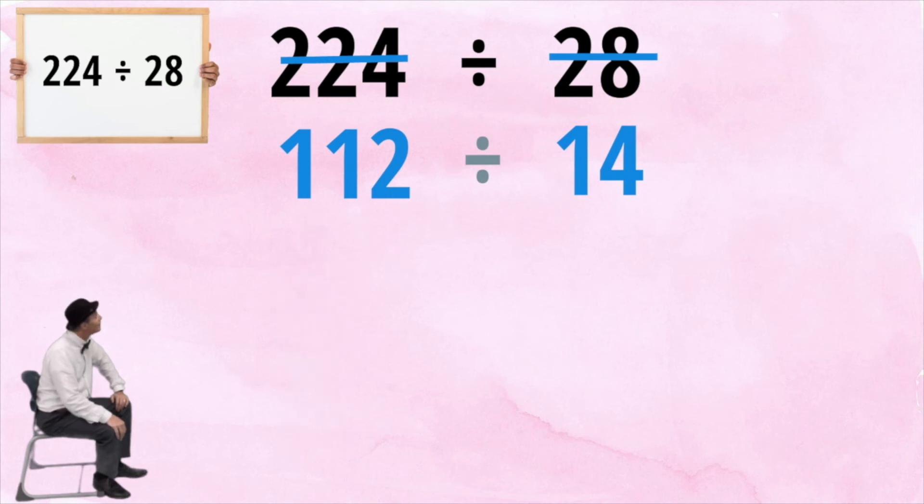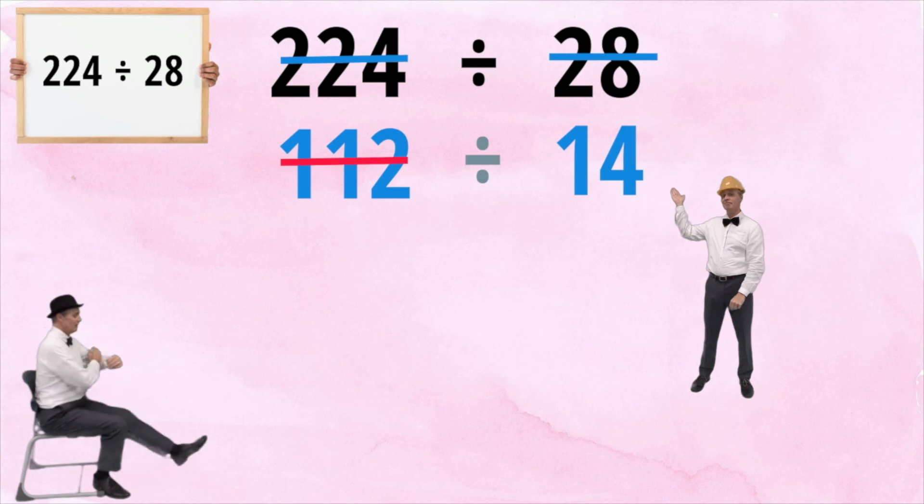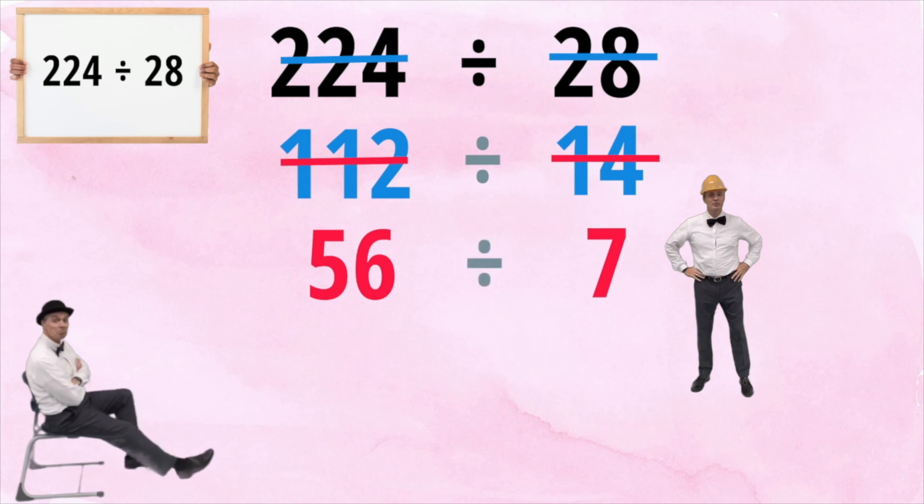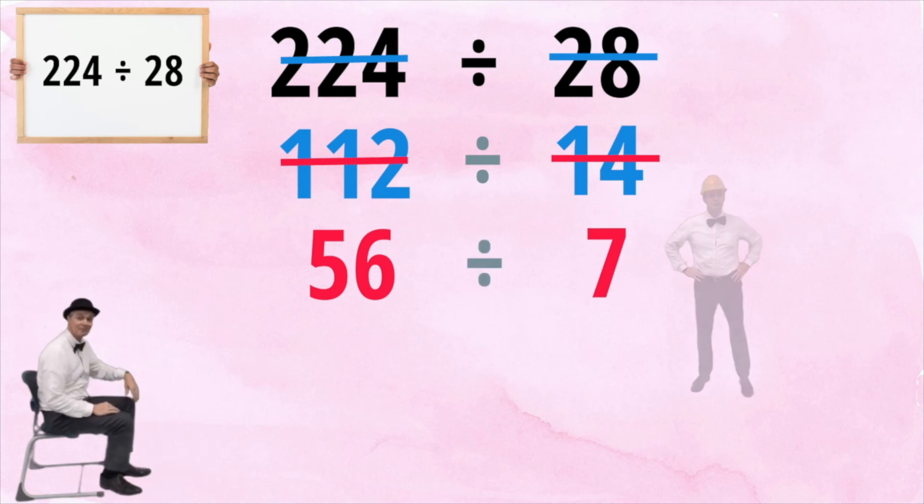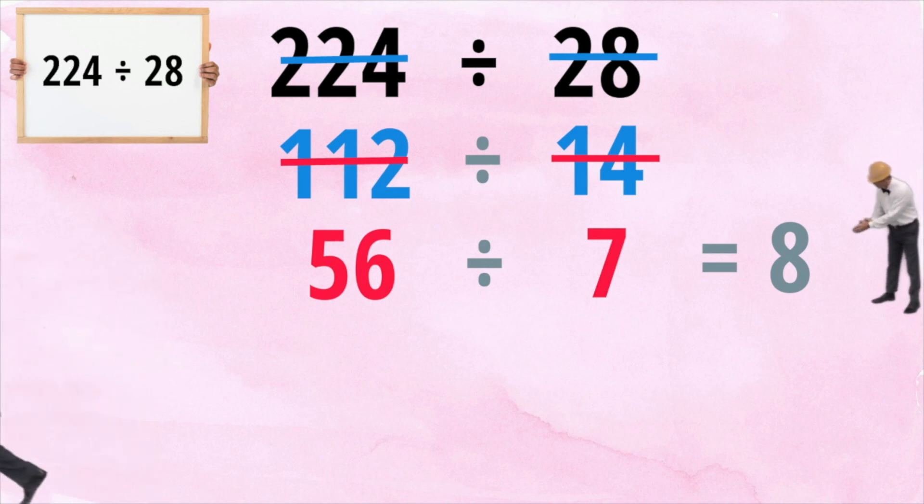However, both numbers are still even, so we can half them again. Half of 112 is 56, and half of 14 is 7. 56 divided by 7 is, of course, 8. So 224 divided by 28 is also 8.